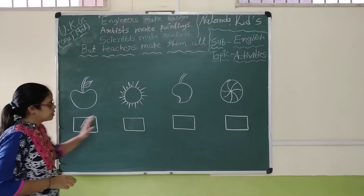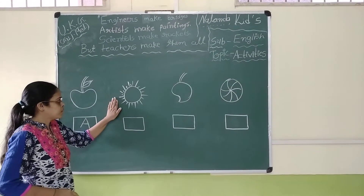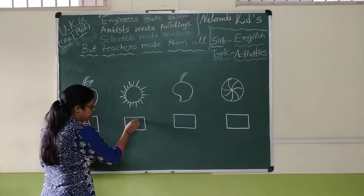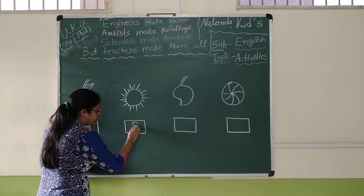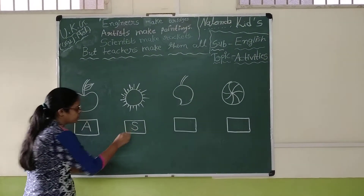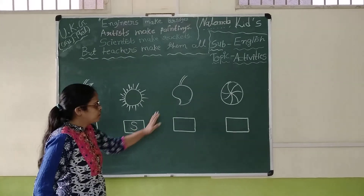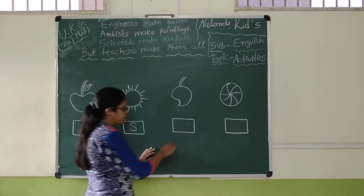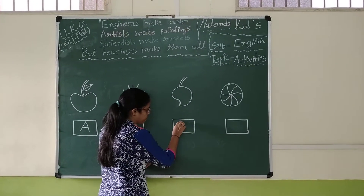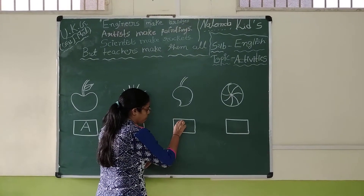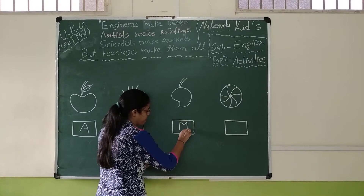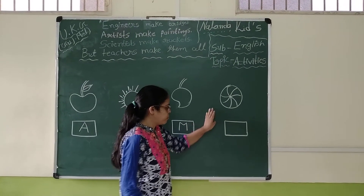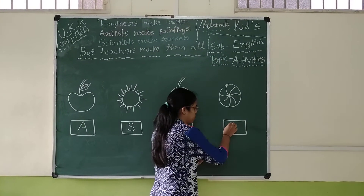The second level is sun. S for sun. The second level is mango. M for mango. The second level is bowl. B for bowl.